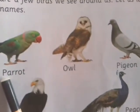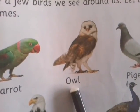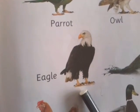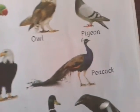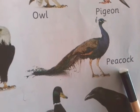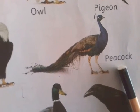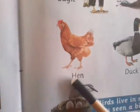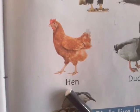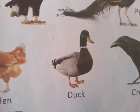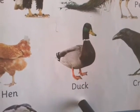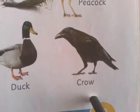Parrot. Now, this one is the owl. This is the pigeon. This is the eagle. Now, this is the beautiful peacock. Peacock also does not fly high. This is the hen. Hen also does not fly. Duck is swimming on the water. This is the crow.